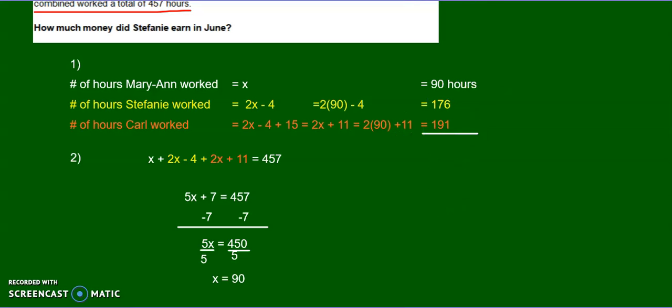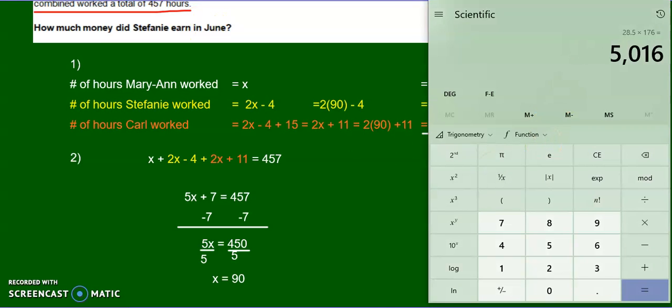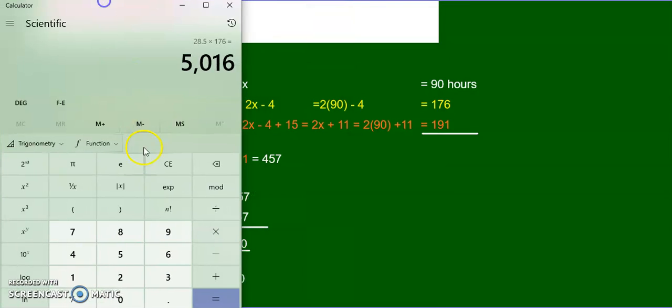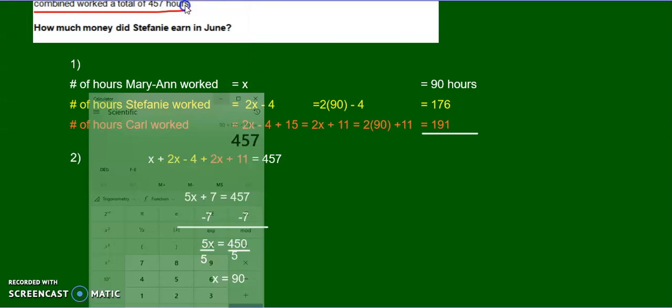What should this all add up to? Well, we were told that the total was 457. So 90 plus 176 plus 191 equals 457. So we're right.